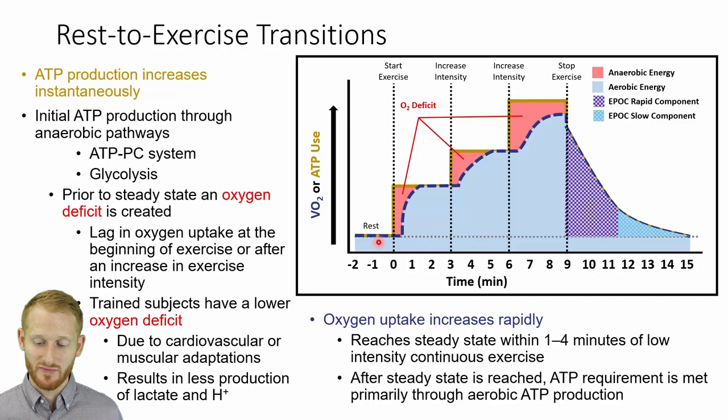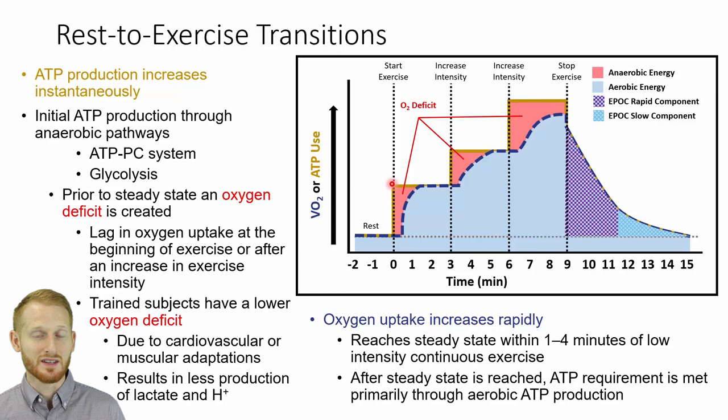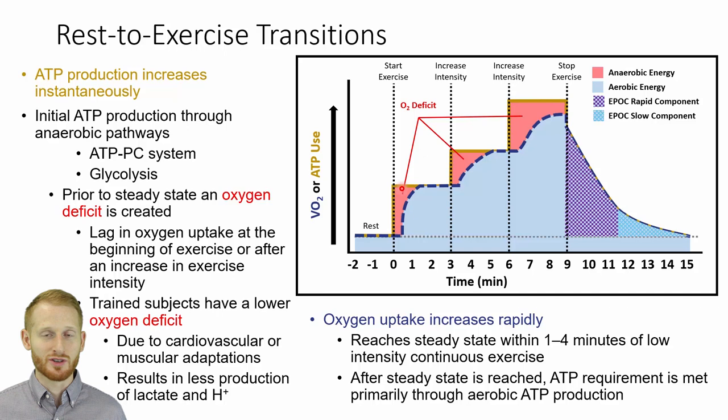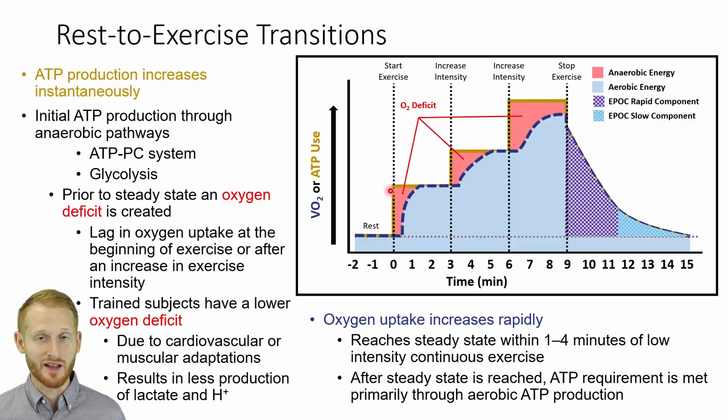Once we hit the dotted line where exercise starts, the ATP line immediately shoots up to meet the needs of the exercise intensity we're trying to perform at. If it didn't, you wouldn't be able to do the exercise. We immediately have this increase in ATP use, plateauing at whatever level the exercise is — for example, turning on the treadmill at three miles per hour and walking. Energy use goes up and stays at that level until you change intensity again.